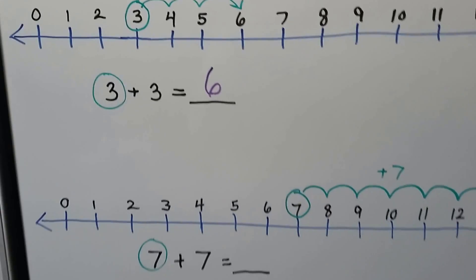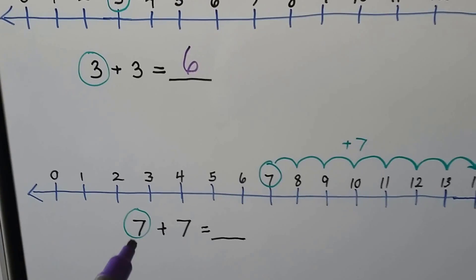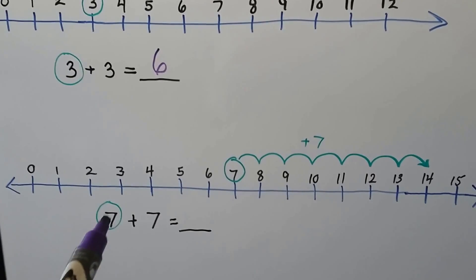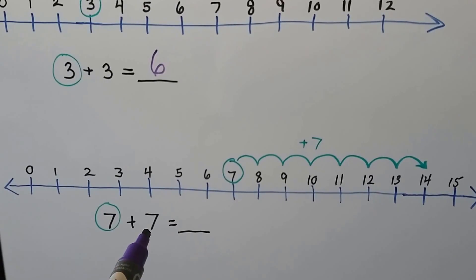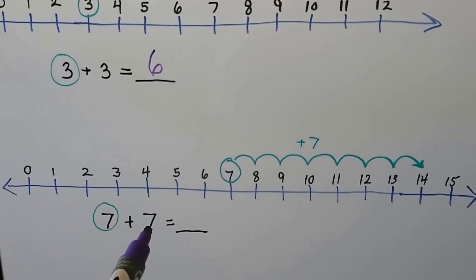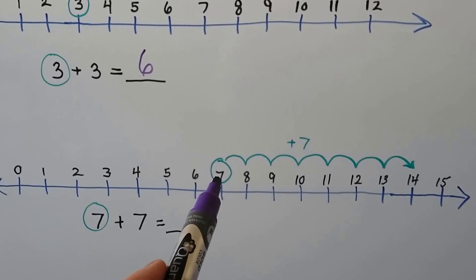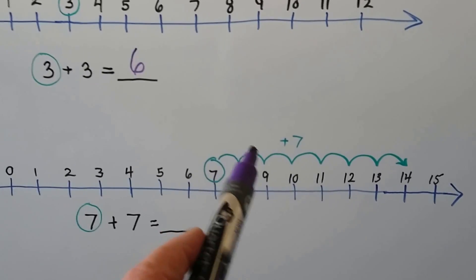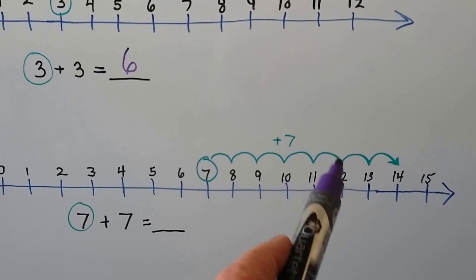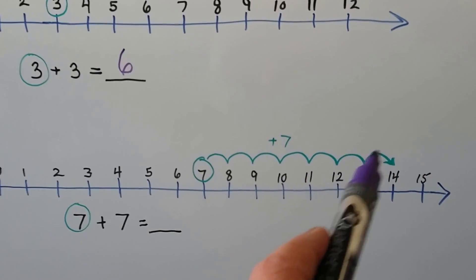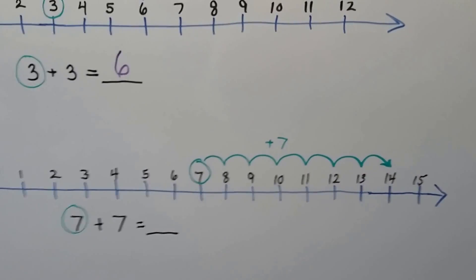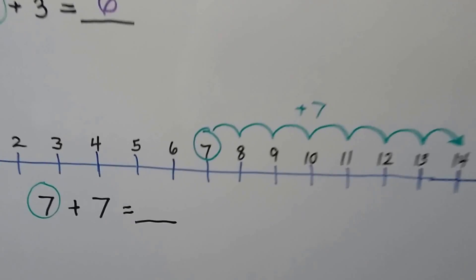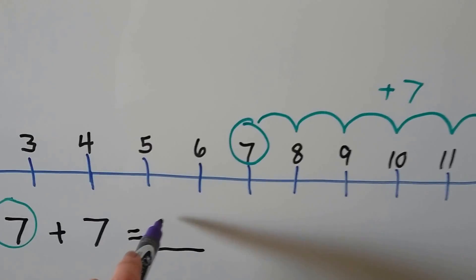We can do it again. We can do 7 plus 7. We start at the 7 and make 7 hops: 1, 2, 3, 4, 5, 6, 7. That puts us at 14. So 7 plus 7 is equal to 14.